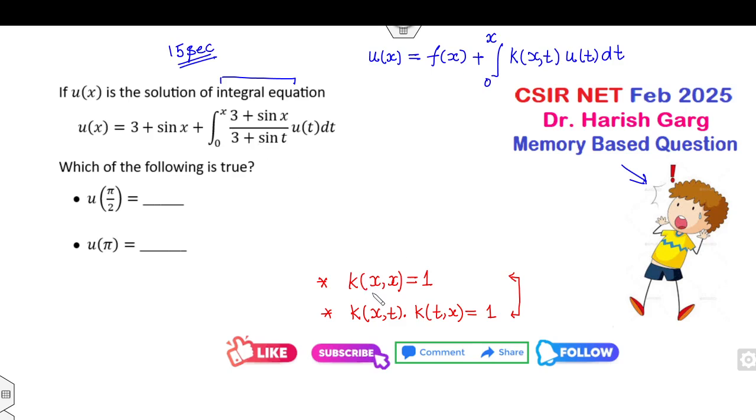So clearly, k(x,x) is 1, so it will be cancelled out, satisfied. k(x,t) and k(t,x) again will be cancelled out. So yes, both properties are satisfied. Once both properties are satisfied, can you find the resolvent kernel?